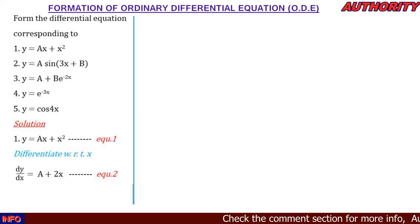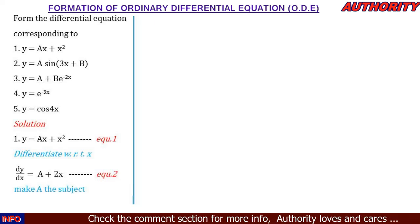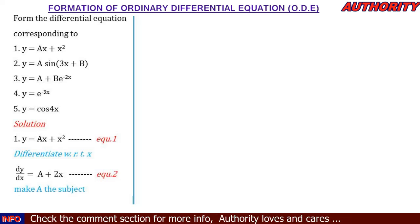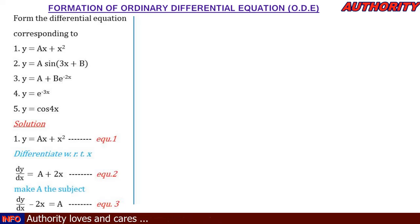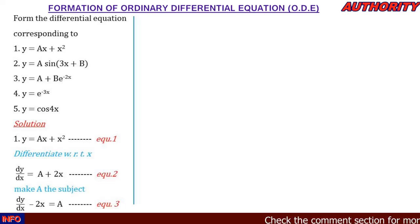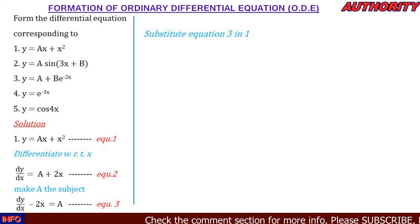From equation 2, dy/dx = a + 2x. Making 'a' the subject by taking 2x to the other side, we get a = dy/dx − 2x. Call this equation 3. We now know the value of 'a', so we substitute it into equation 1.